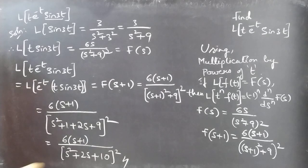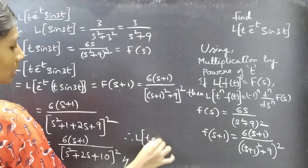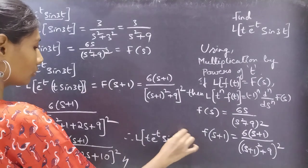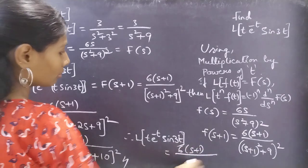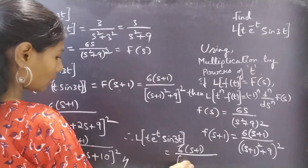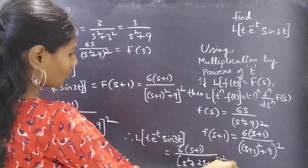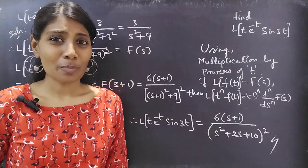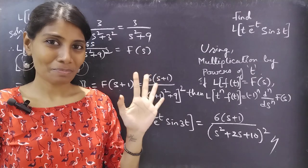Therefore, L of t·e^(-t)·sin 3t equals 6(s plus 1) by (s square plus 2s plus 10) whole square. We have seen a problem from Laplace transform in this video. I hope you understand. We'll see you in the next video. Until then, bye-bye.